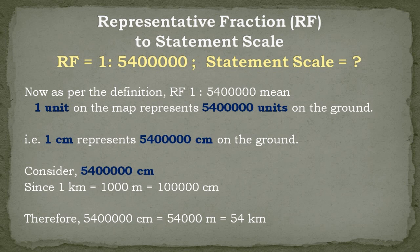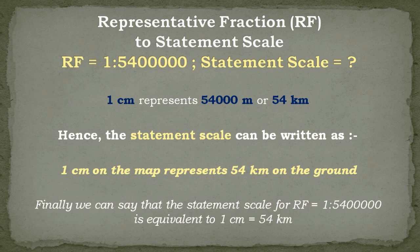Now consider the figure 54 lakh centimeters. Since 1 kilometer is equal to 1,000 meters, which is equal to 1 lakh centimeters, therefore we can write that 54 lakh centimeters is equal to 54,000 meters, which is equal to 54 kilometers. It means that for this map with a representative fraction of 1 is to 54 lakhs, 1 centimeter represents 54,000 meters or 54 kilometers. Hence the statement scale can be written as: 1 centimeter on the map represents 54 kilometers on the ground.